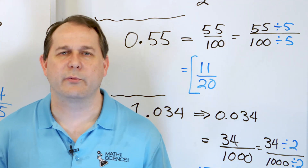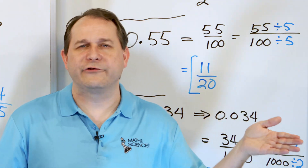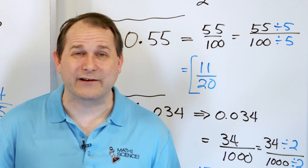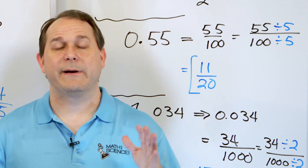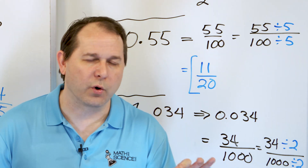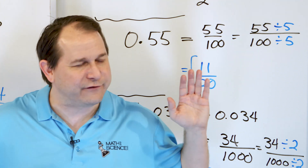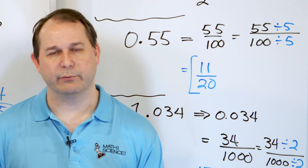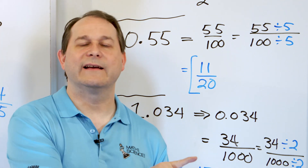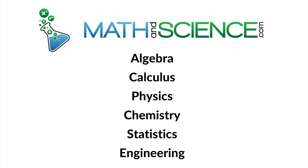That wraps up the idea of converting a decimal into a fraction, and it wraps up this whole unit where we've learned and reviewed what a fraction is, how to compare fractions, how to order fractions from smallest to largest, common denominators, greatest common factors, and least common multiples. In the next unit, we'll work more problems with adding and subtracting fractions. Everything we've learned here is important as we move on. Solve all of these problems, and when you're satisfied, follow along to the next lesson at mathandscience.com.